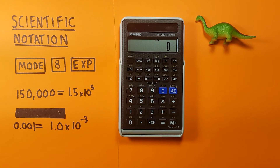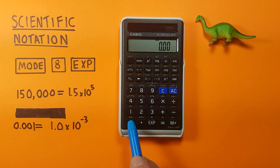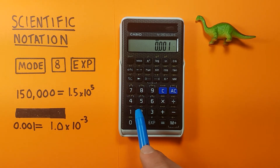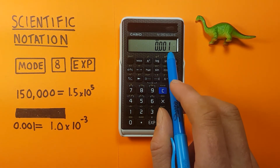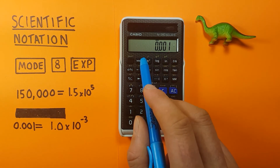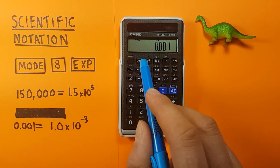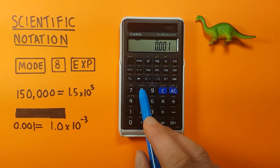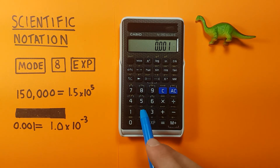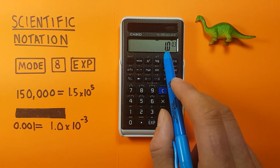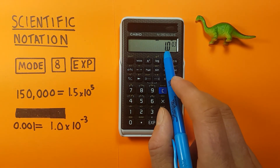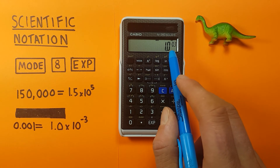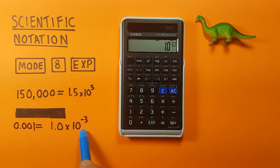These also work for very small numbers. Say we have 0.001 and want to convert it to scientific notation. We press mode 8, then 2 for 2 sig figs, and we get 1.0 times 10 to the negative 3.